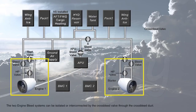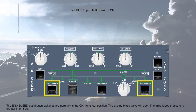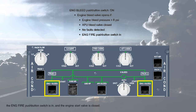The two engine bleed systems can be isolated or interconnected by the cross-bleed valve through the cross-bleed duct. The engine bleed push-button switches are normally in the on, lights-out position. The engine bleed valve will open if engine bleed pressure is greater than 8 psi, the APU bleed push-button switch is off, or the APU bleed valve is closed. There is no on-side wing or pylon leak, and no over-pressure or over-temperature has been detected. The engine fire push-button switch is in and the engine start valve is closed.